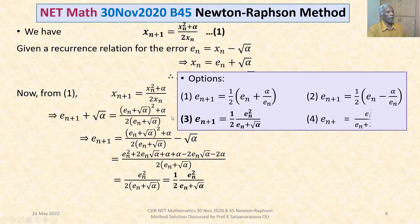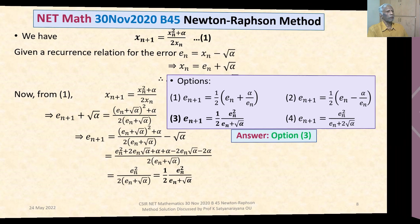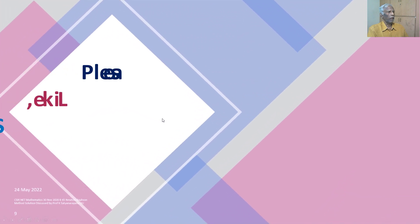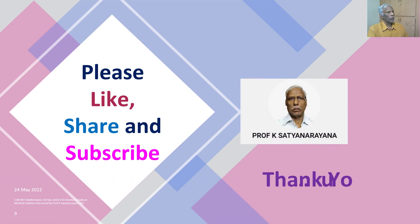Looking at the four options, our answer En+1 = (1/2)·En² / (En + √alpha) matches option 3. Therefore, the answer is option 3. This is a straightforward question from numerical analysis based on the Newton-Raphson method. One or two questions will come from numerical analysis in the exam, so concentrate on this section and practice more problems. I wish you all the best. Thank you.